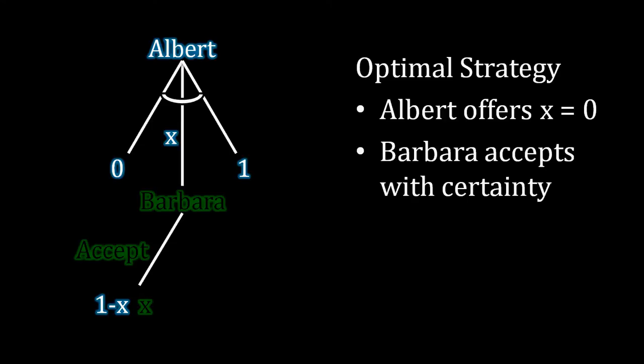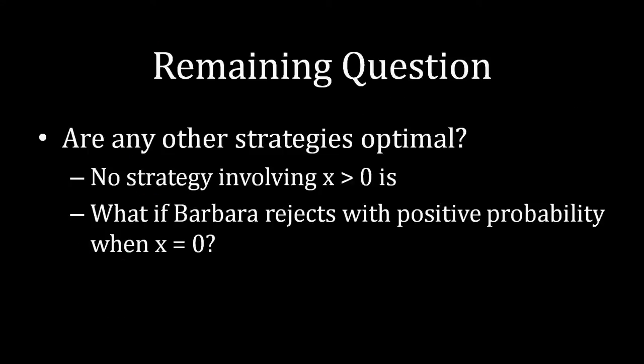But there's the remaining question of, are there any other strategies that have this mutually optimal quality about them? And the answer is no. We know this because there is no other strategy involving an amount being offered greater than zero. We saw that last time, where if Albert were to be offering some positive amount to Barbara, he could always give her a little bit less, and still ensure her compliance because she's receiving a strictly positive amount and therefore has to accept.